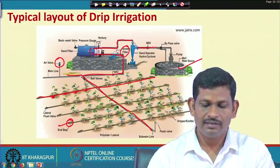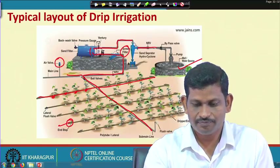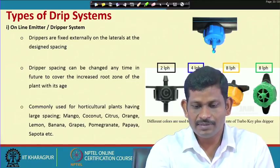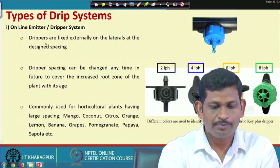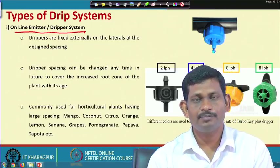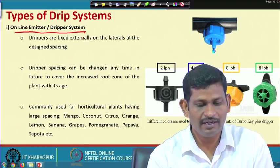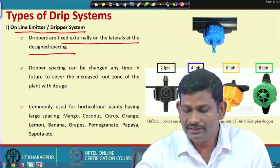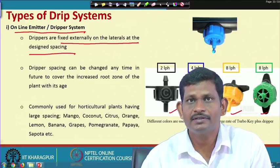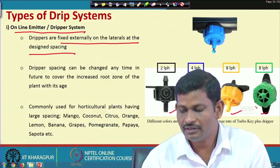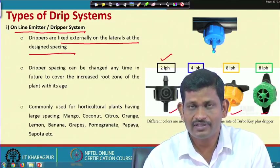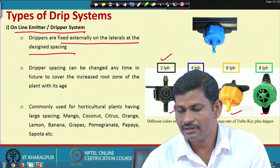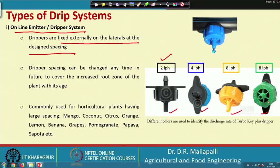The sprinklers are replaced with drippers and otherwise it is almost similar. For how to design this system, first let us look at the online emitter or dripper system. The drippers are fixed externally on the lateral at the design spacing. Drippers are color-coded based on the discharge from each dripper — for example, the black one has 2 LPH, the blue one 4 LPH, the yellow one 8 LPH, and the green one is a pressure-compensating type at 8 LPH.